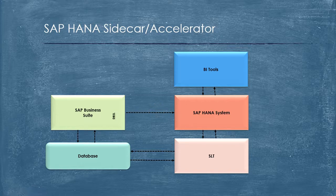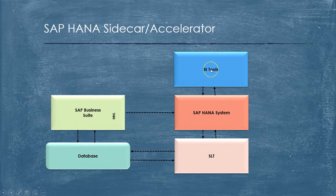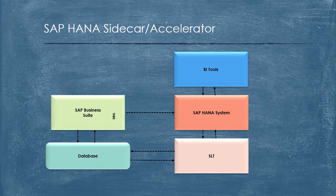That's one use case for HANA. At the same time, whatever logic they have built to create a report, they can try out that logic using SAP HANA native modeling and access those reports using Business Objects tools. In that way, they'll get to know the advantages that HANA can bring into their landscape, and then they can decide on what to do next. That's the implementation use case of SAP HANA Sidecar, also called SAP HANA Accelerator.